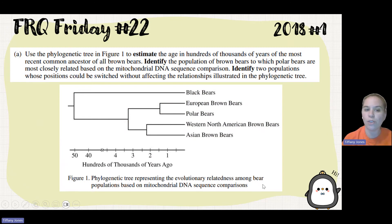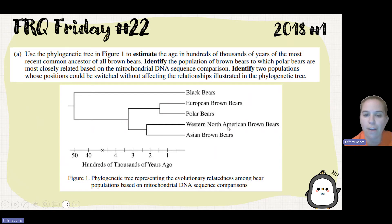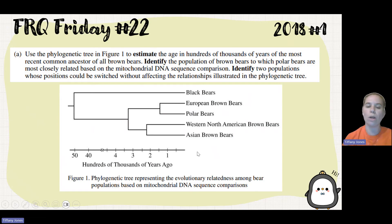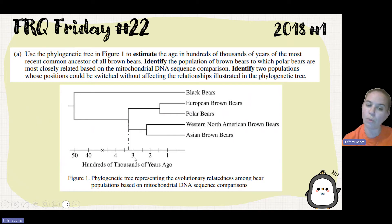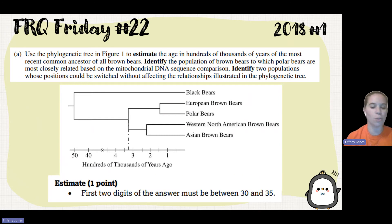Part A asks us to use the phylogenetic tree in figure one to estimate the age, in hundreds of thousands of years, of the most recent common ancestor of all brown bears. Looking at the phylogenetic tree, we can identify the brown bears and find their divergence or branch point. Dropping that line down, we see it falls somewhere between 3.0 and 3.5 hundreds of thousands of years ago. The scoring guideline says as long as your first two digits are between 30 and 35, you get credit.